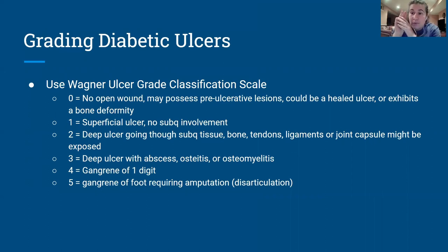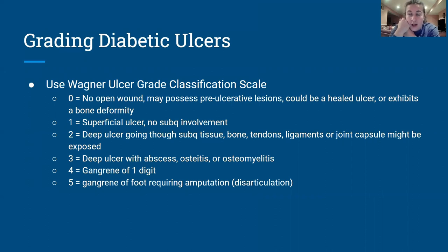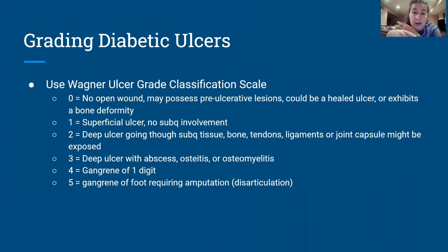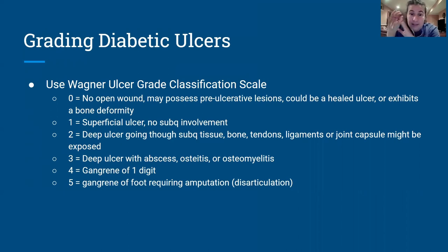Grade three is where it starts getting really dangerous and could affect the patient's overall systemic health. A grade three would be a deep ulcer with abscess, osteitis, or osteomyelitis. There's an active infection — staph bacteria causes the osteomyelitis, and osteitis means the bone is inflamed. With abscesses, there's going to be pus and exudate coming out. These diabetic ulcers at this stage — like C. diff — you will never get the smell out of your nose.